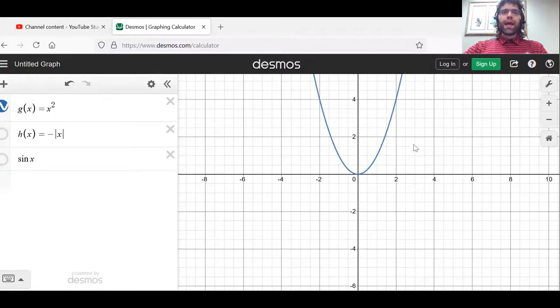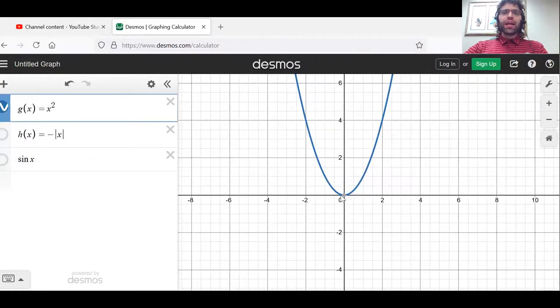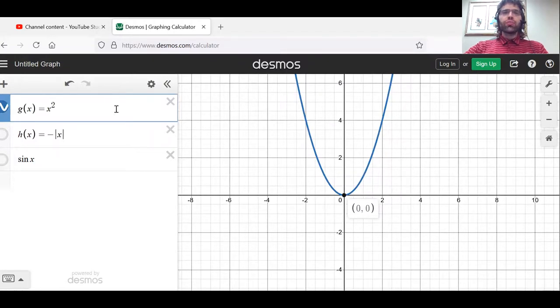X squared had an absolute minimum here and no absolute maximum. If you look at this on the interval from one to two, now your absolute minimum is somewhere else, and you have an absolute maximum.